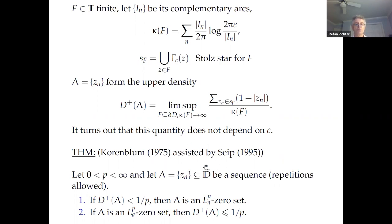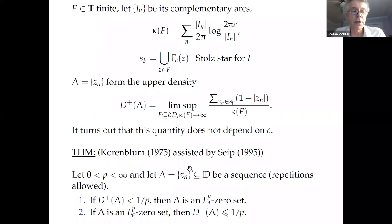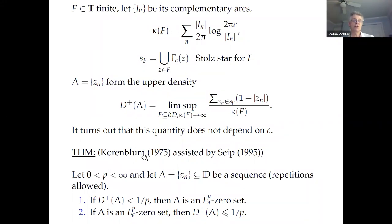To read about this, the book by Hedenmalm, Korenblum, and Zhu gives a cleaner approach using estimates on harmonic functions on the approach regions rather than conformal mappings, making it easier than going back to the original papers, although it's still a very complicated proof.